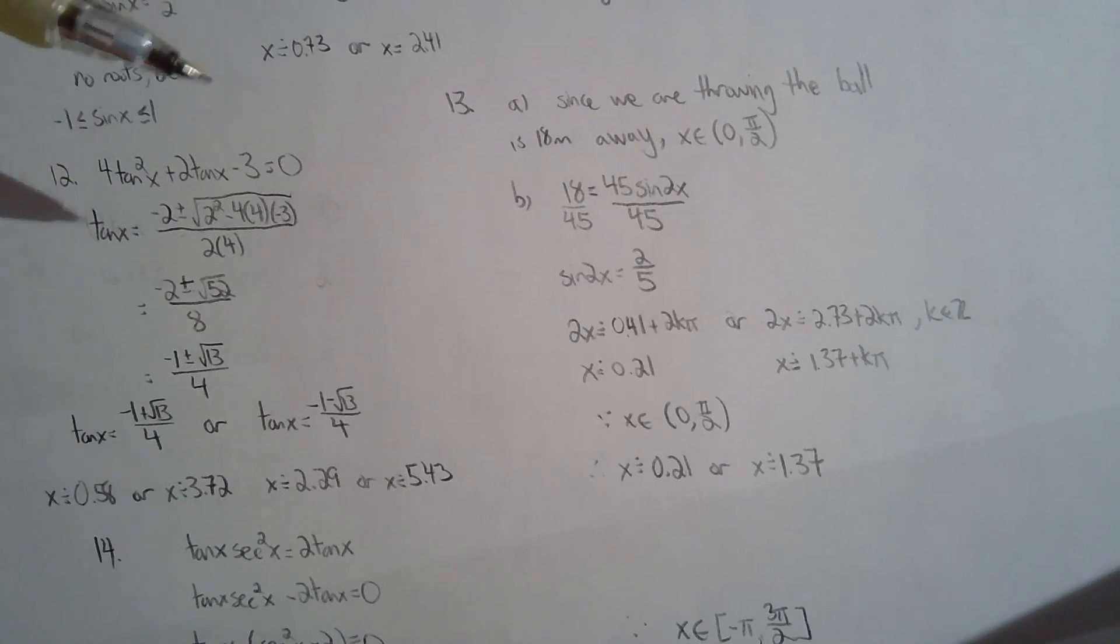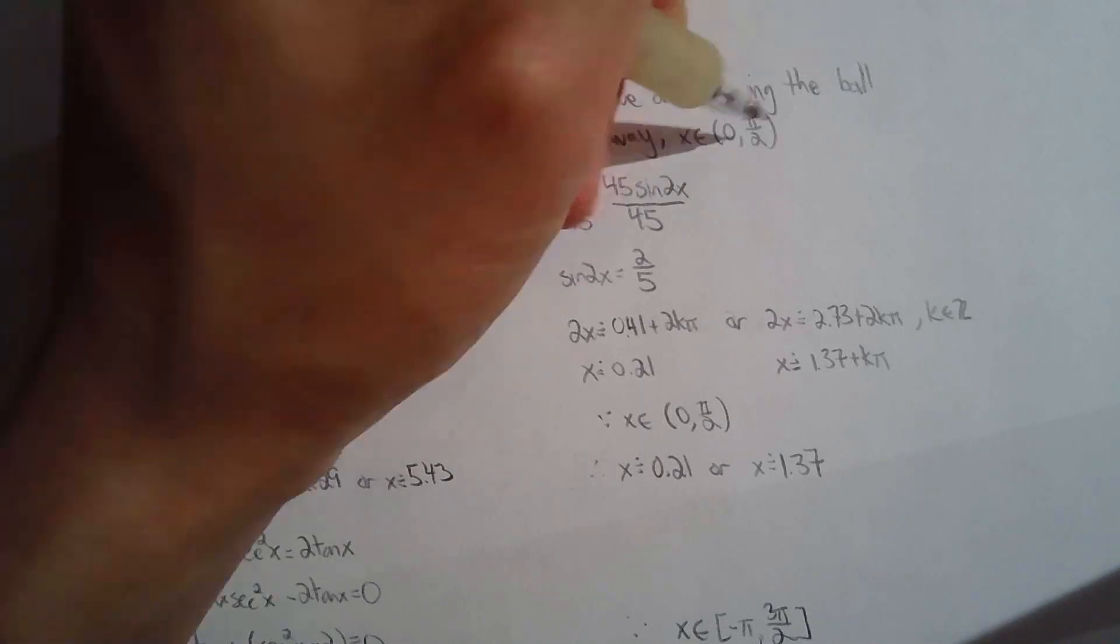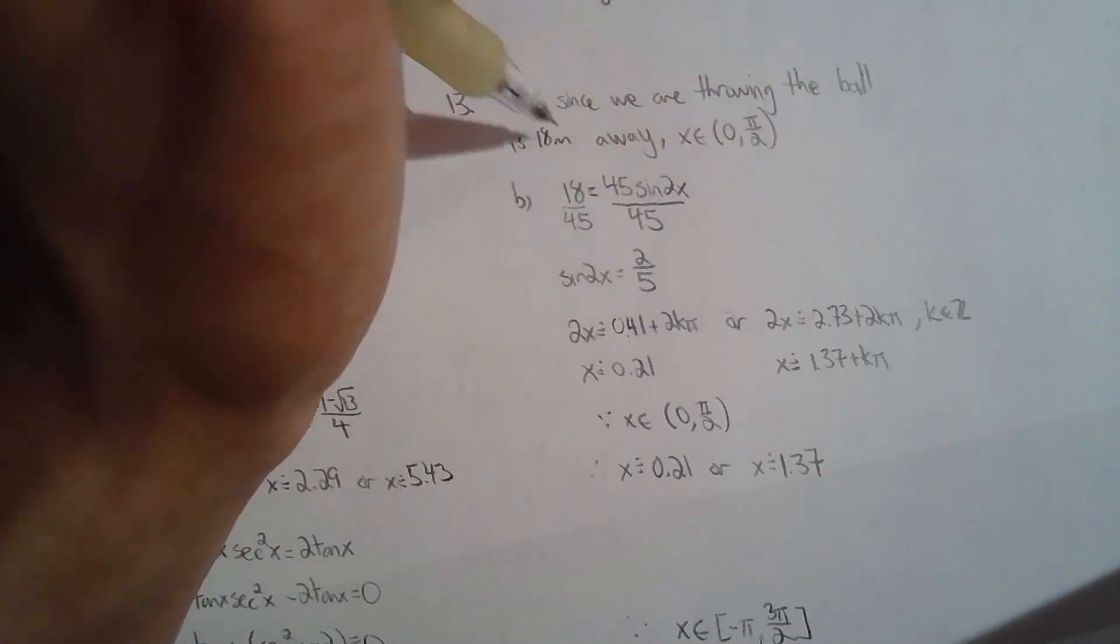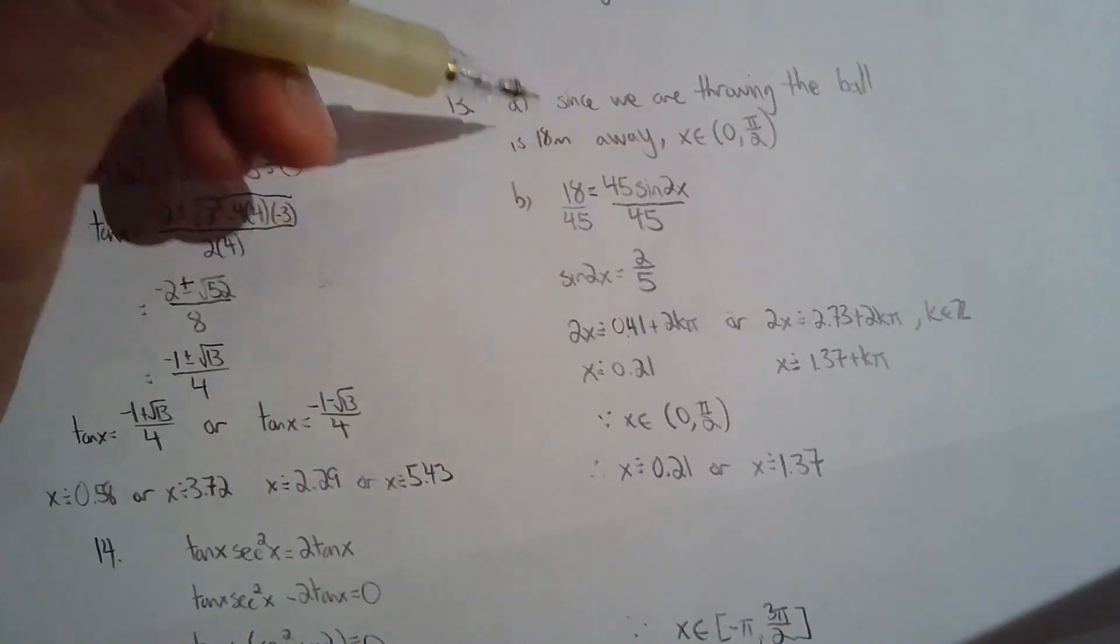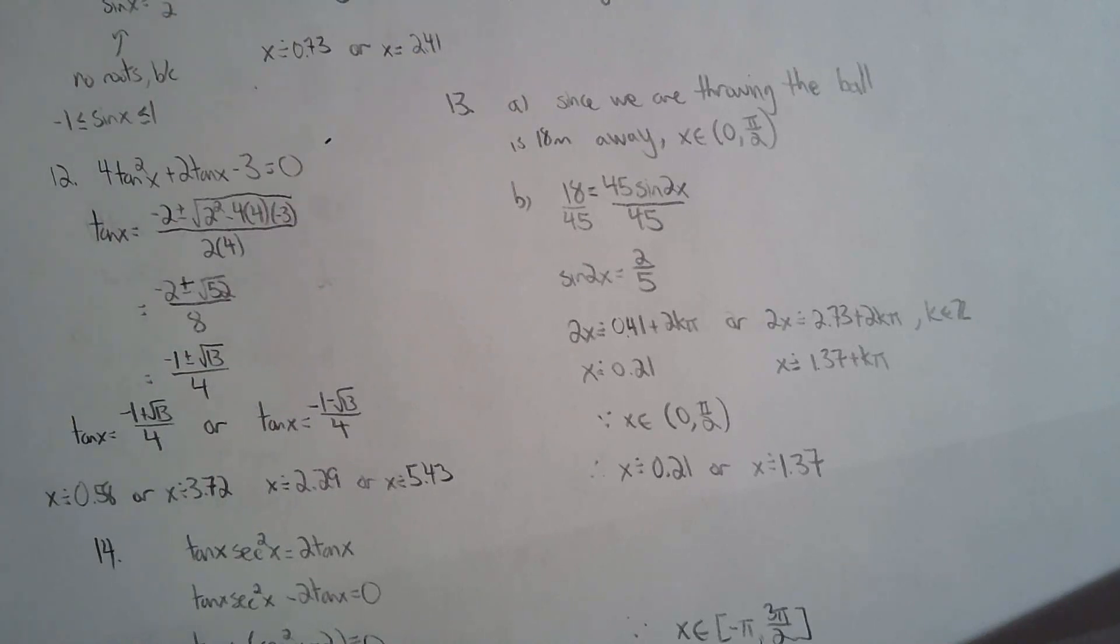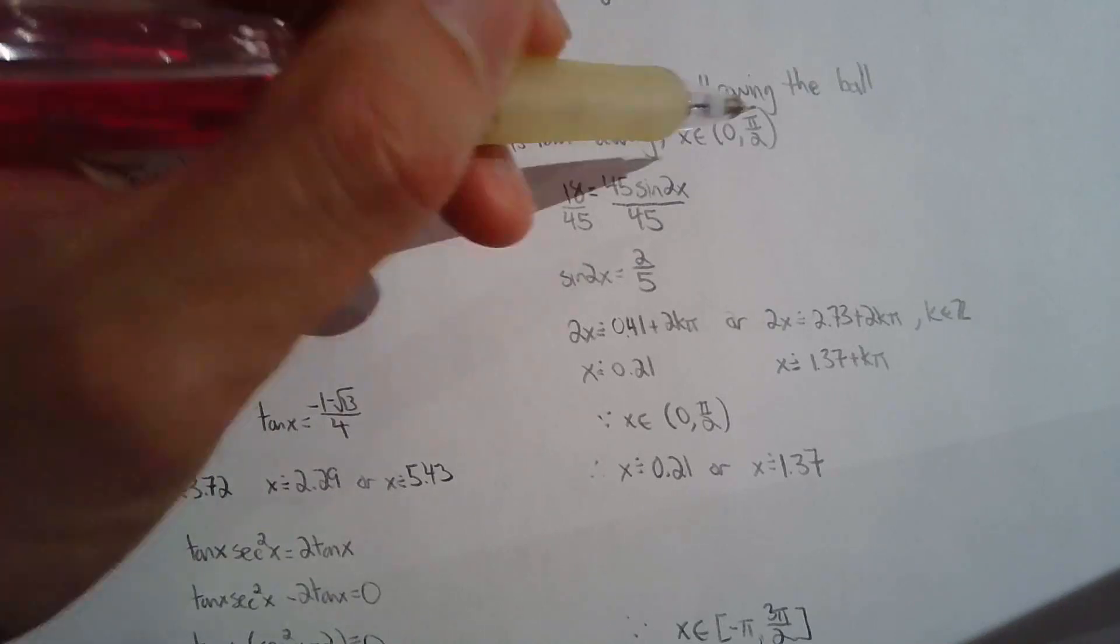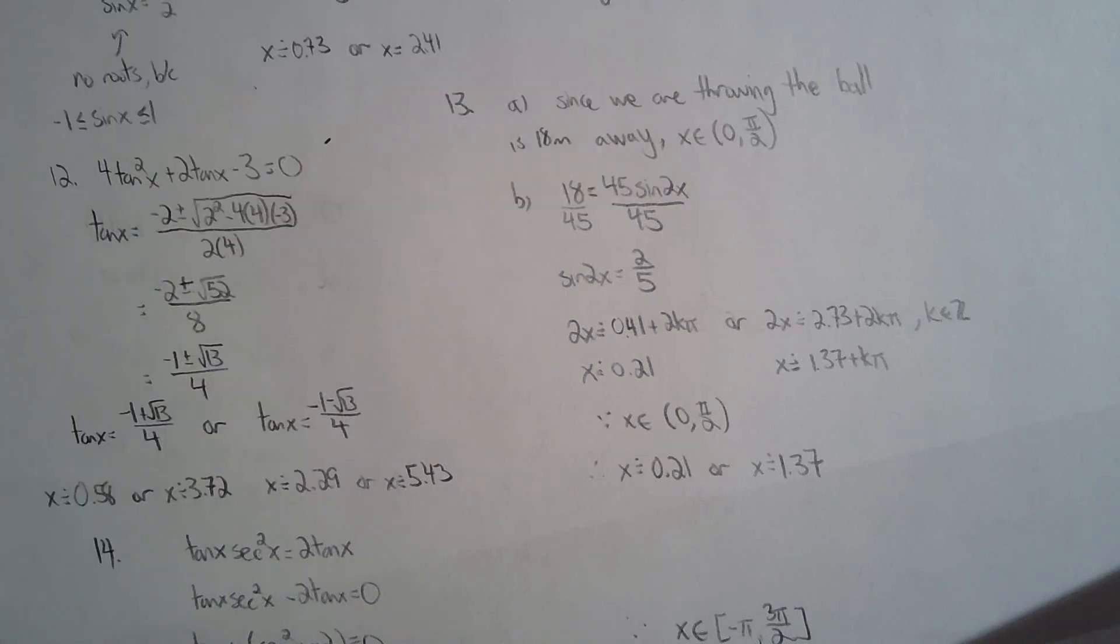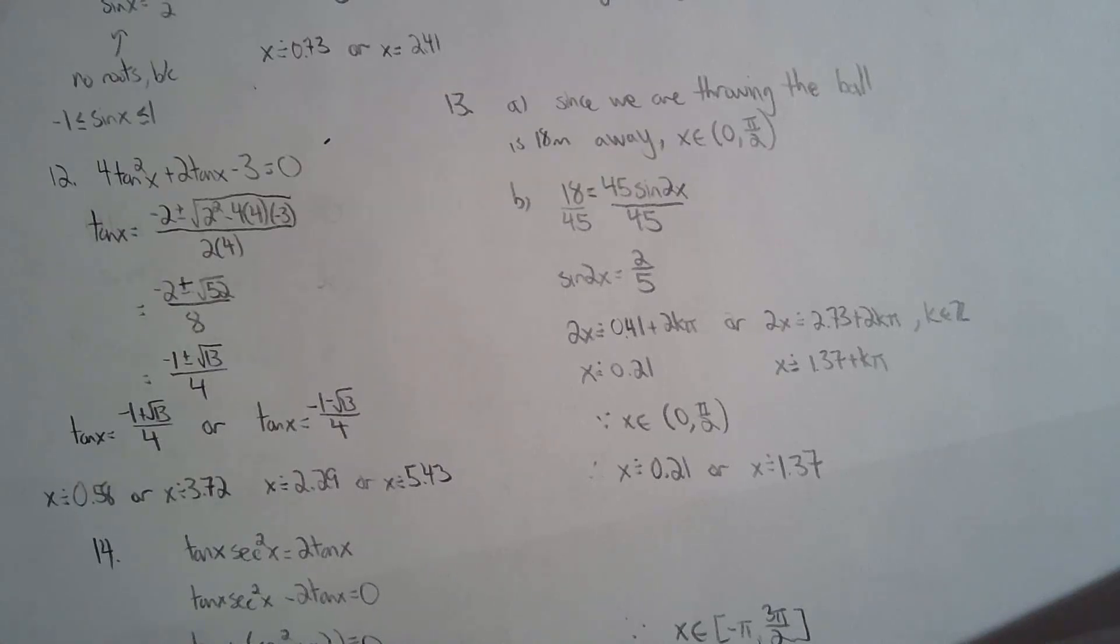Definitely pi over two doesn't make any sense—you can't let the angle be pi over two because then you're just throwing the ball straight up. You're not going to reach the home plate which is 18 meters away. I didn't let x equal zero or pi over two, whereas in the answer key it says including zero and pi over two.